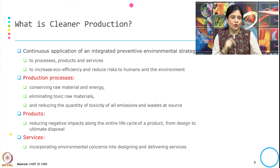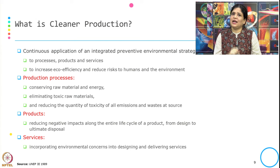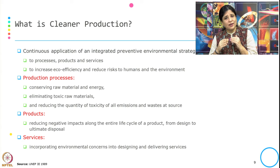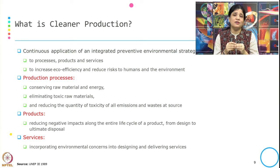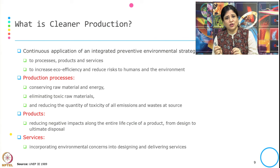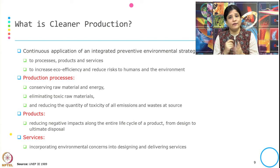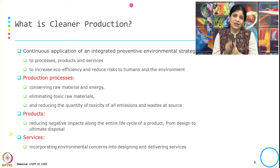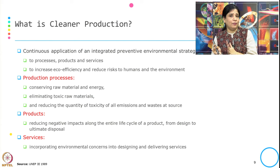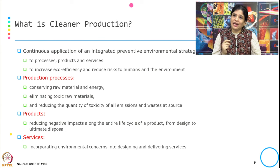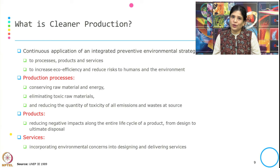Why is cleaner production needed? By doing this, there is an increase in eco-efficiency and a reduction of risk to humans and the environment. Eco-efficiency means delivering better quality goods and services with less impact on the environment. So cleaner production is the continuous application of an integrative preventive strategy to process, product, and services, because ultimately we want to increase eco-efficiency and reduce risk to humans and the environment.